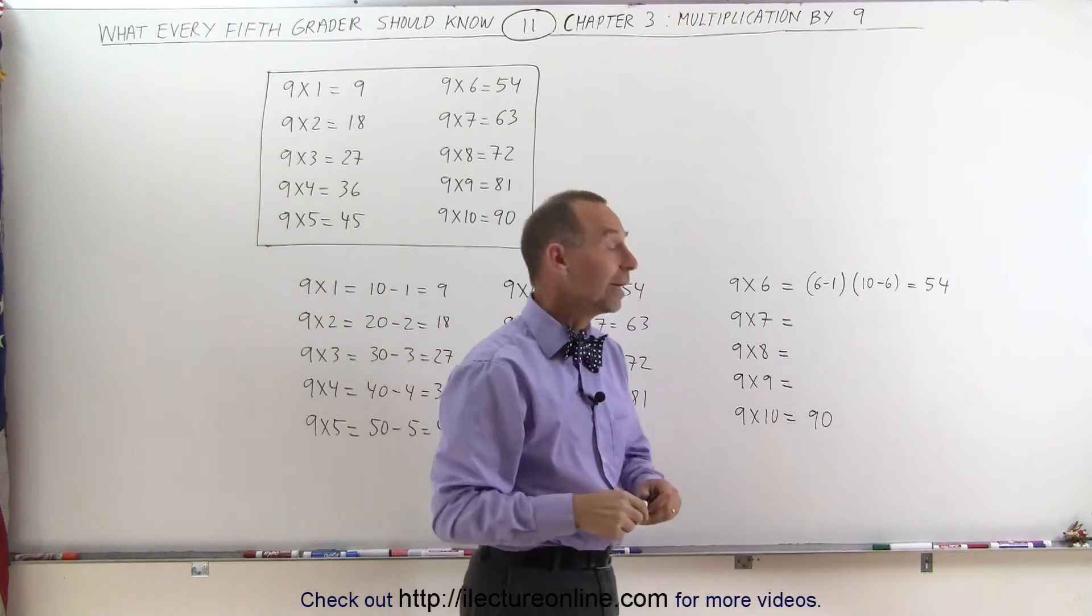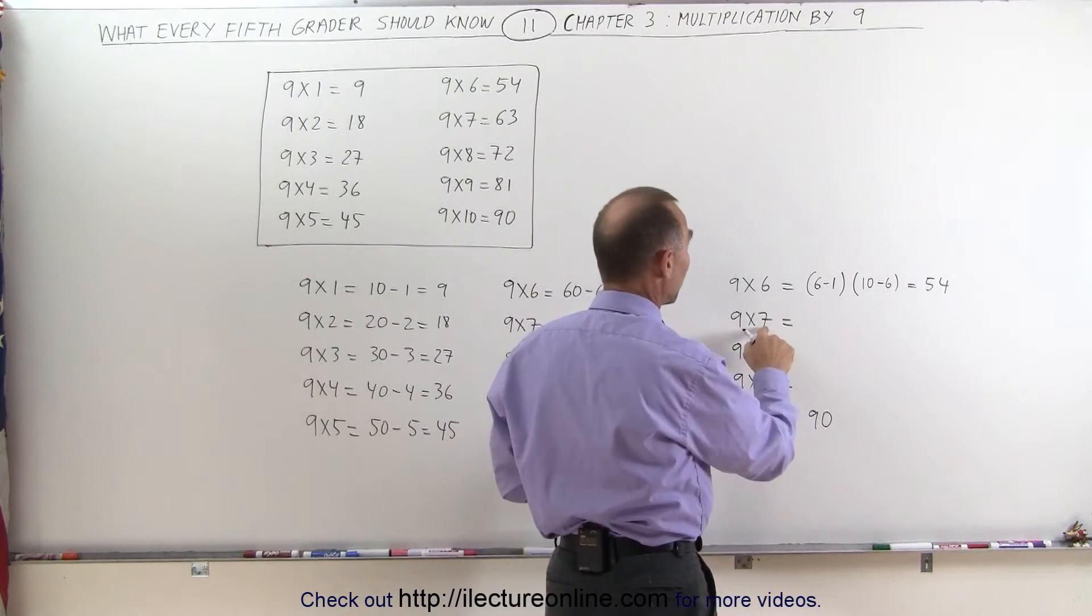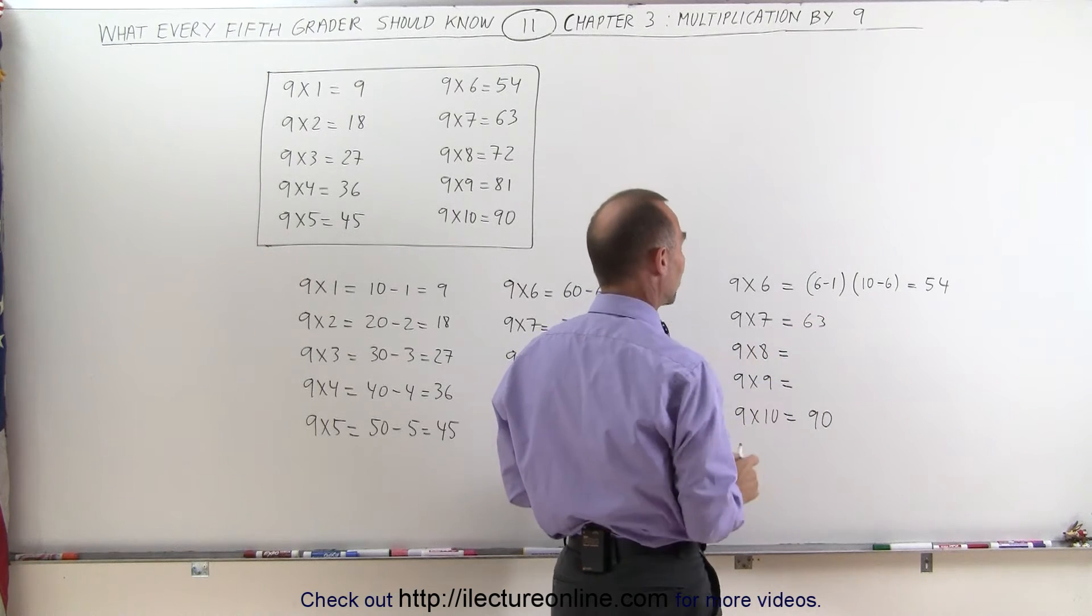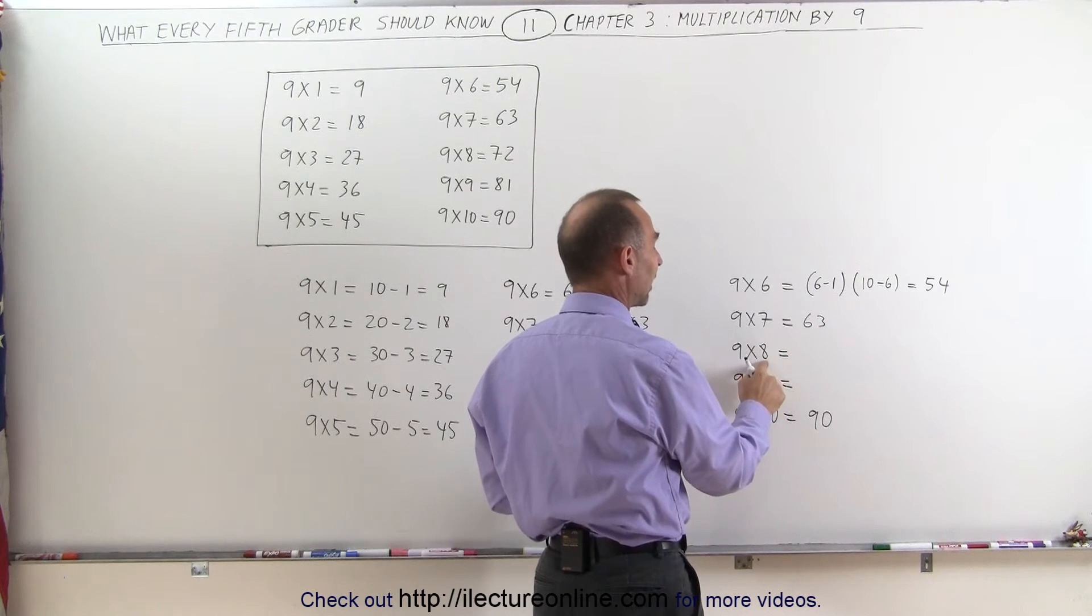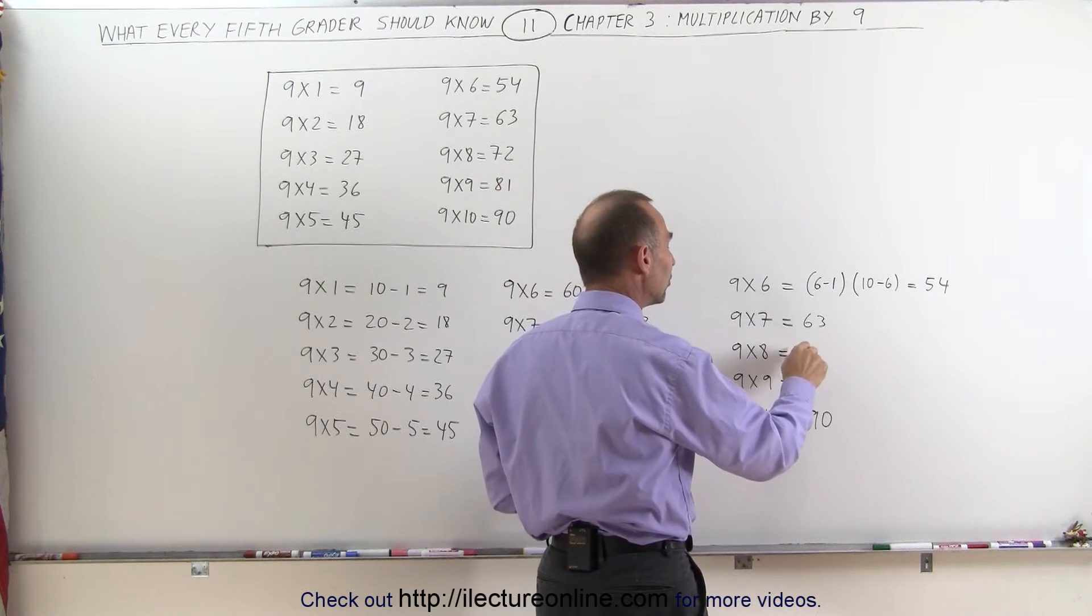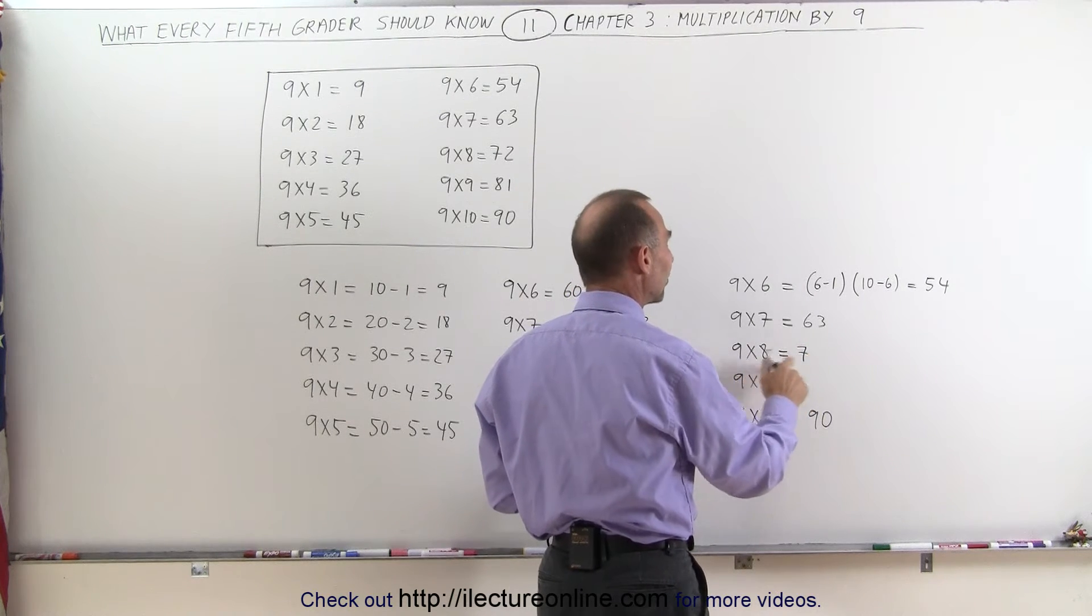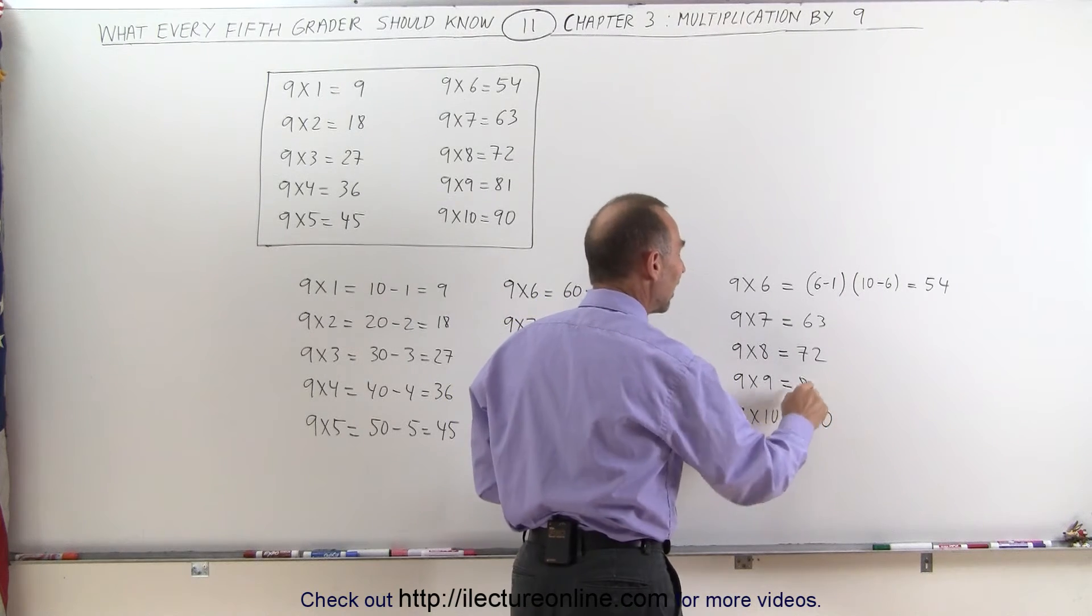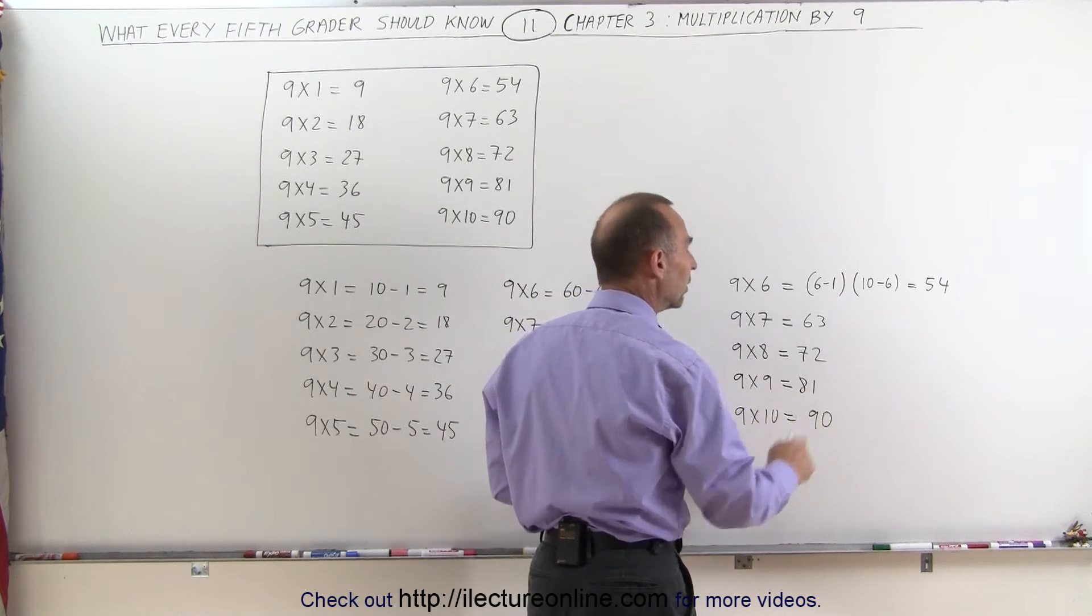And I would do the same with 9 times 7. I would put the number 1 less than this down, and then 10 minus 7 is 3, and it would be 63. 9 times 8 I grab a number 1 smaller than 8 which is 7, and take 10 minus 8 which is 2. 9 times 9 I would take 1 less than 9 which is 8, and 10 minus 9 which is 1.